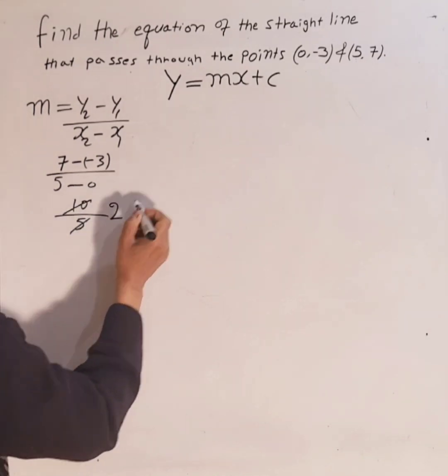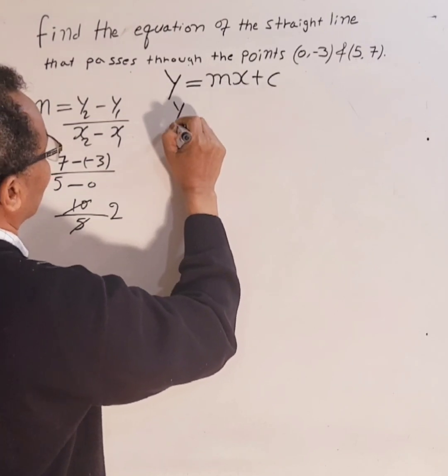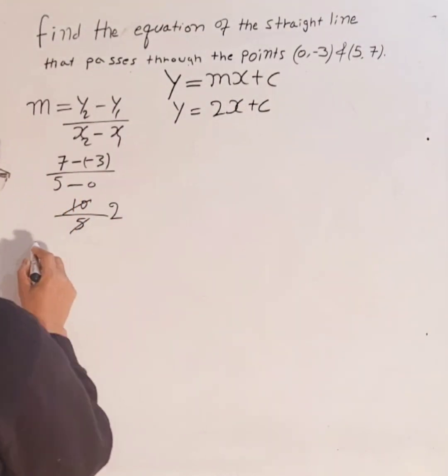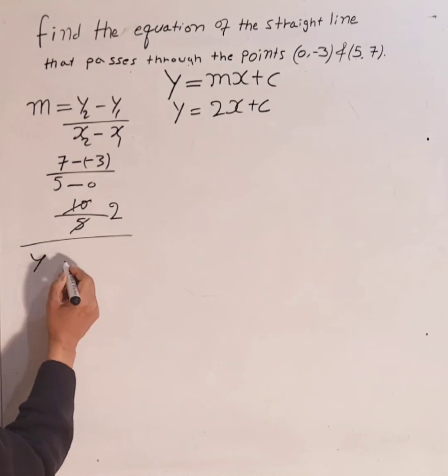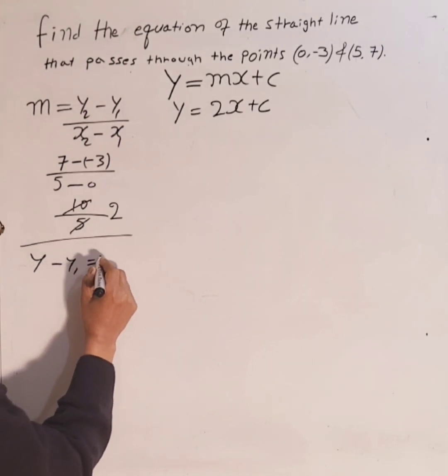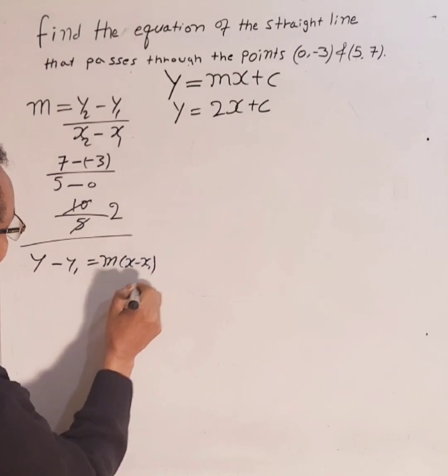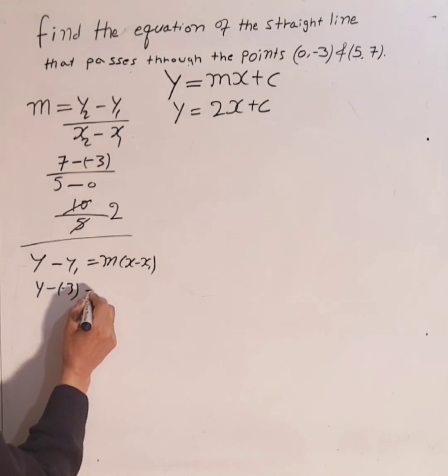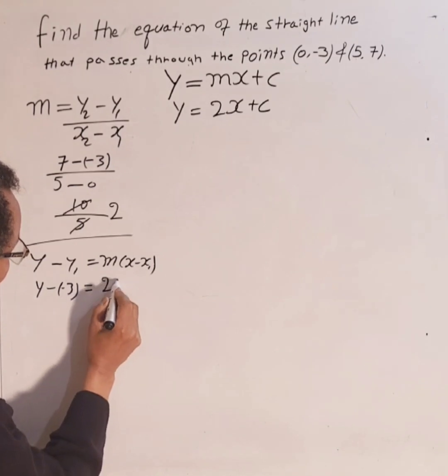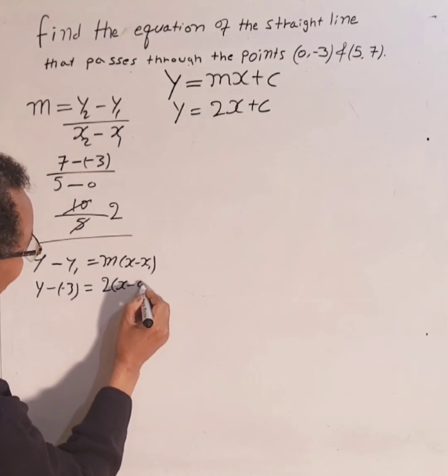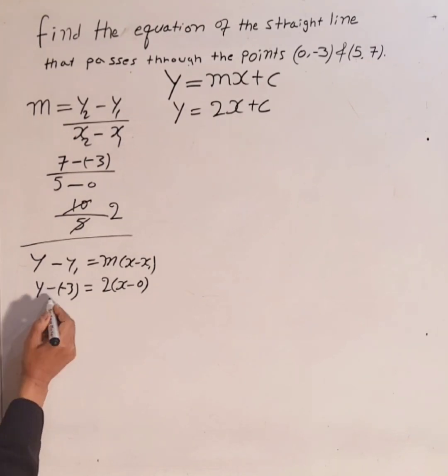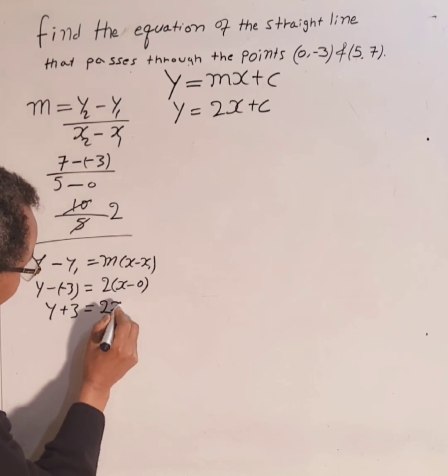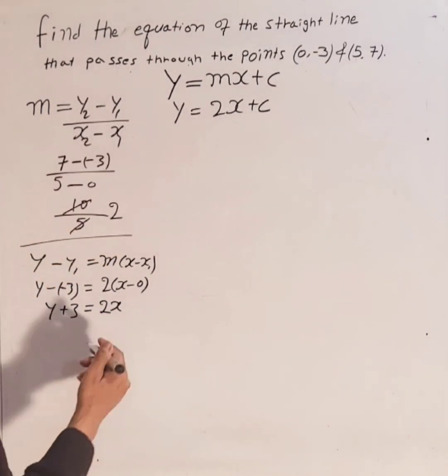So m is 2. Now y = 2x + c. Let's calculate c using y - y1 = m(x - x1). Y take away y1 is negative 3, and x1 is 0. Negative times negative is positive, so y plus 3 equals 2 times x. We don't need to write 0 here. So y plus 3 = 2x, which means y = 2x - 3.